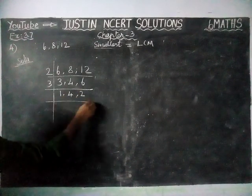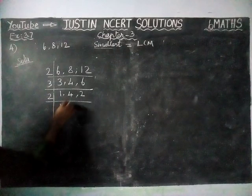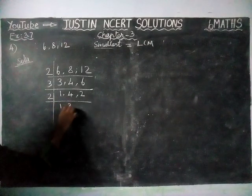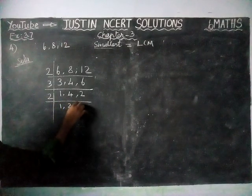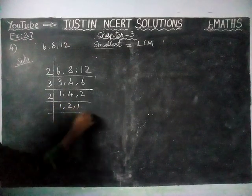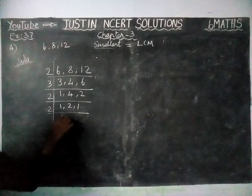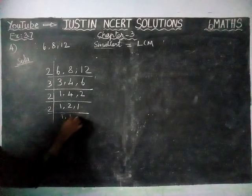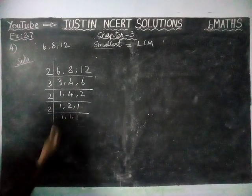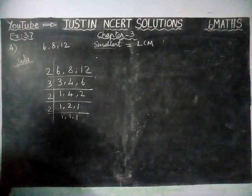Now we can divide by 2. We get 1, 2 twos are 4 becomes 2, and 1. Again dividing by 2, we get 1, 1, 1.